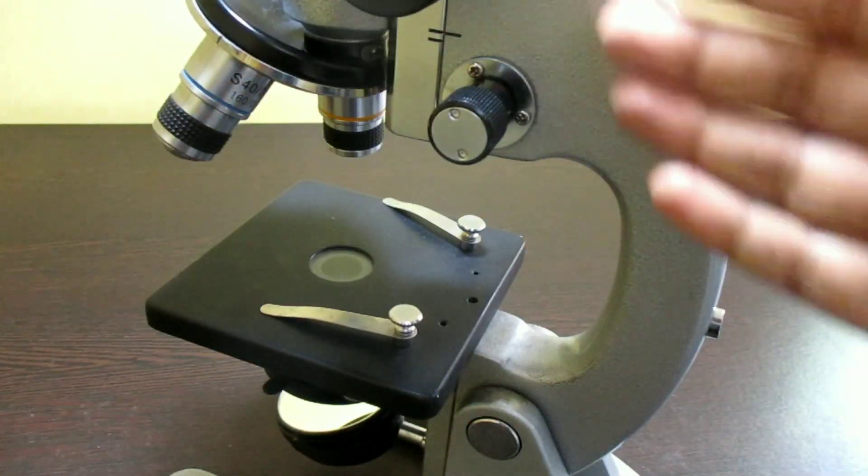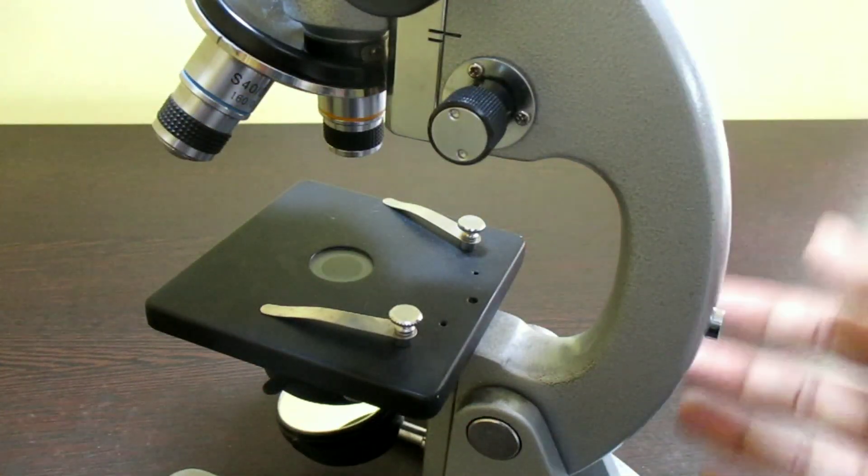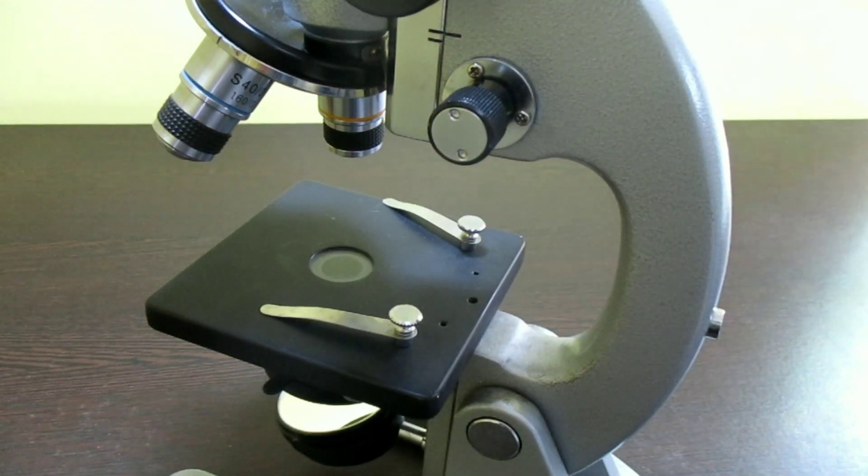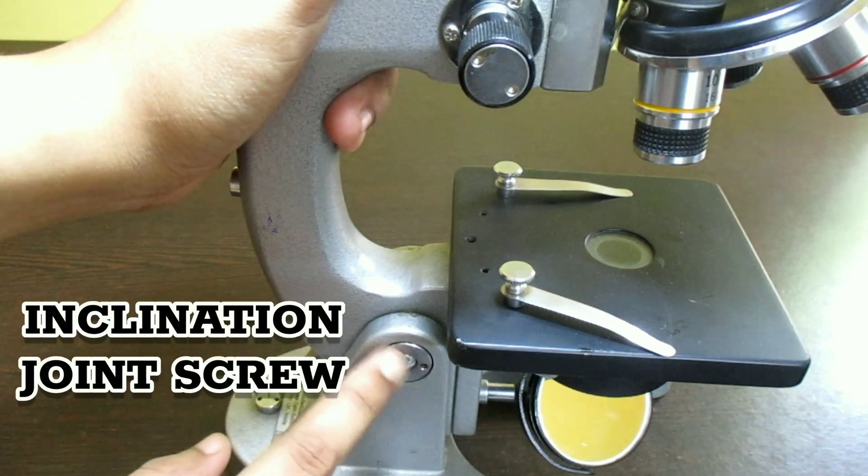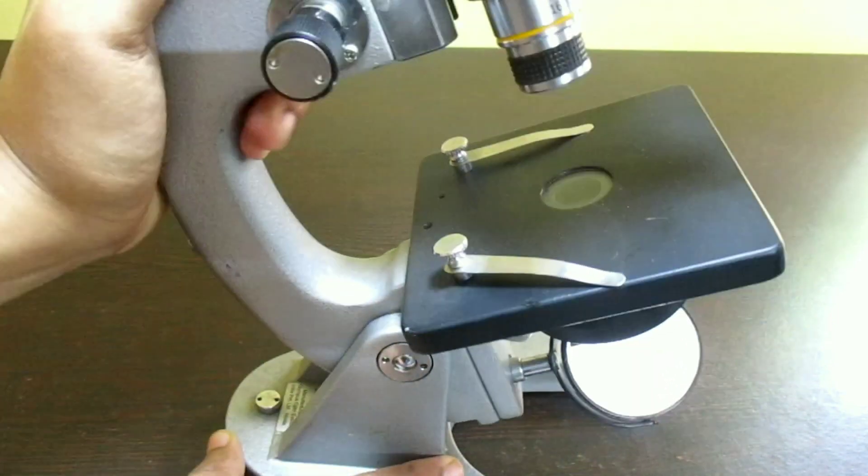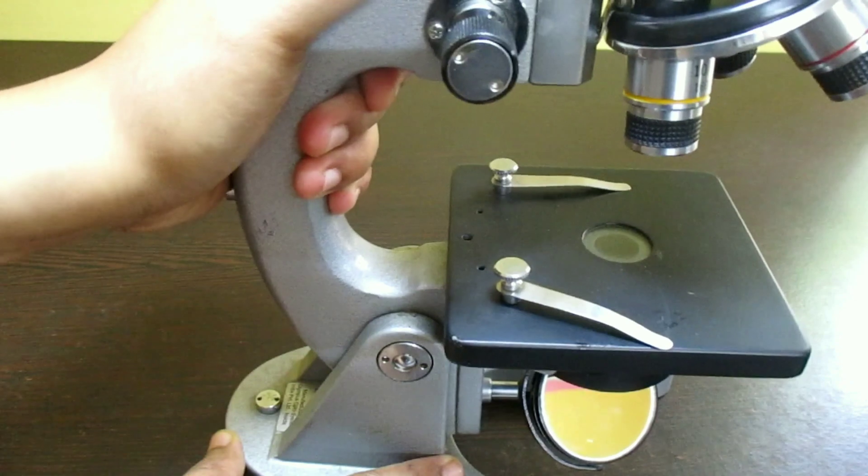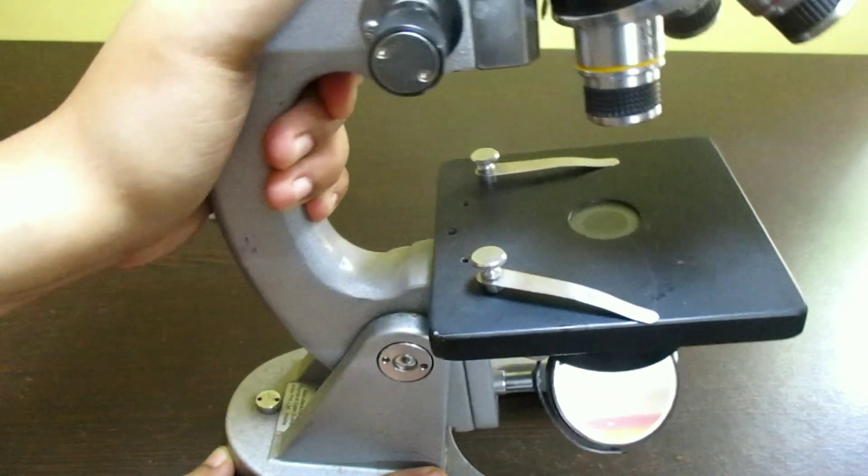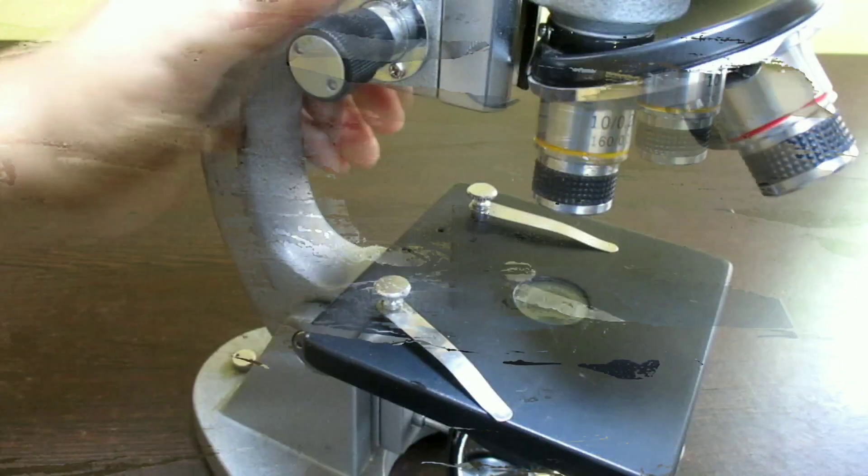The curved metal part located next and slightly behind the pillar is known as arm. The lower part of the arm is attached with the pillar by inclination joint screw. And the attachment side is known as inclination joint. At this place, the arm can be tilted back like this if it is needed.